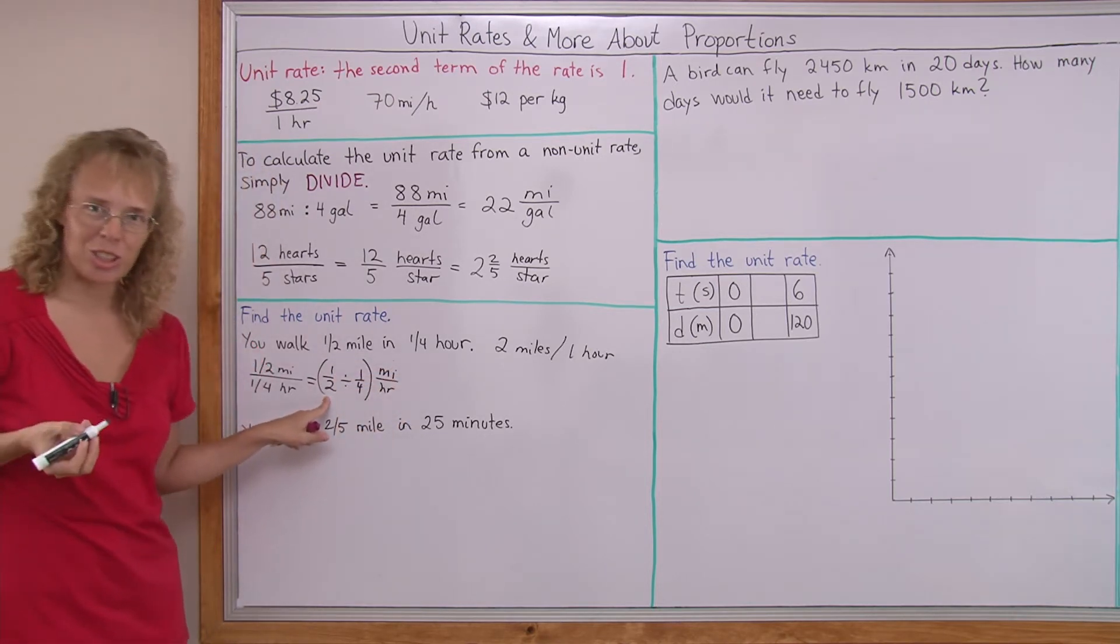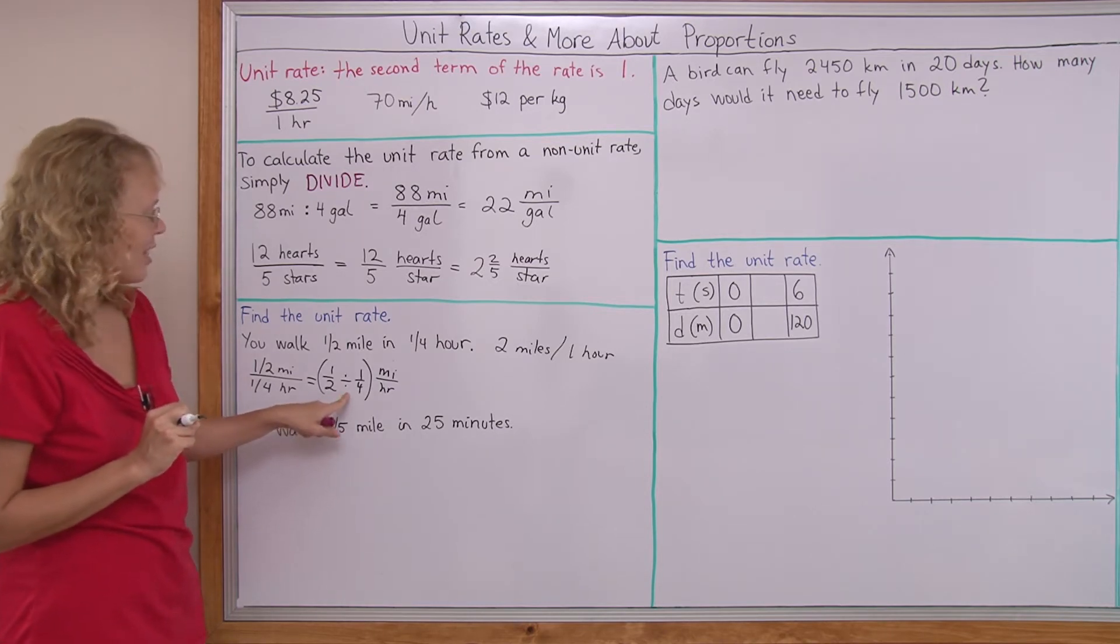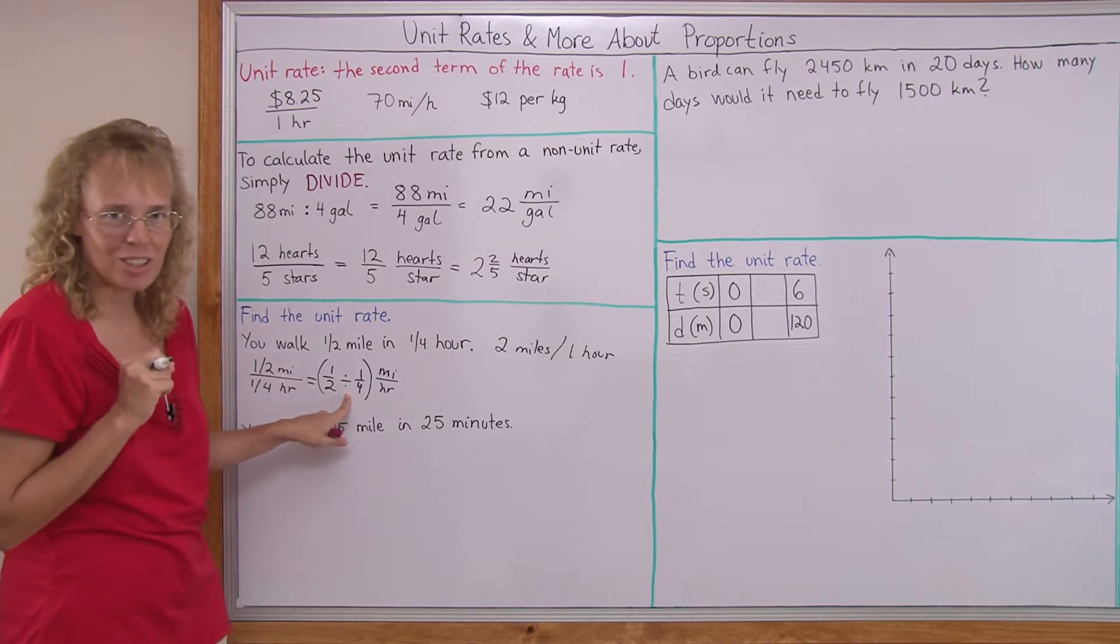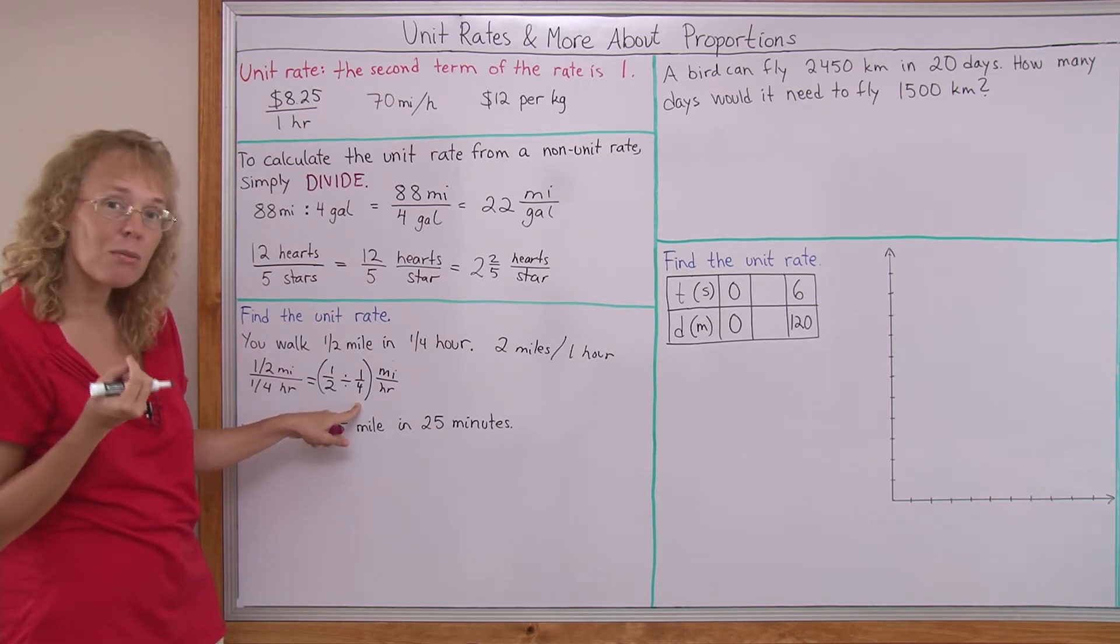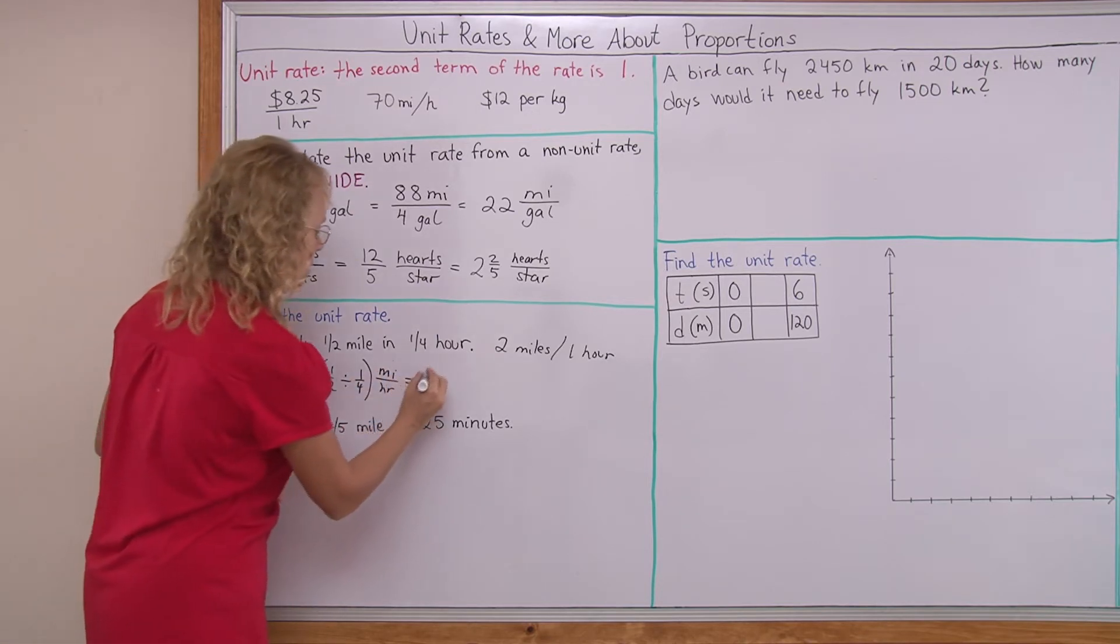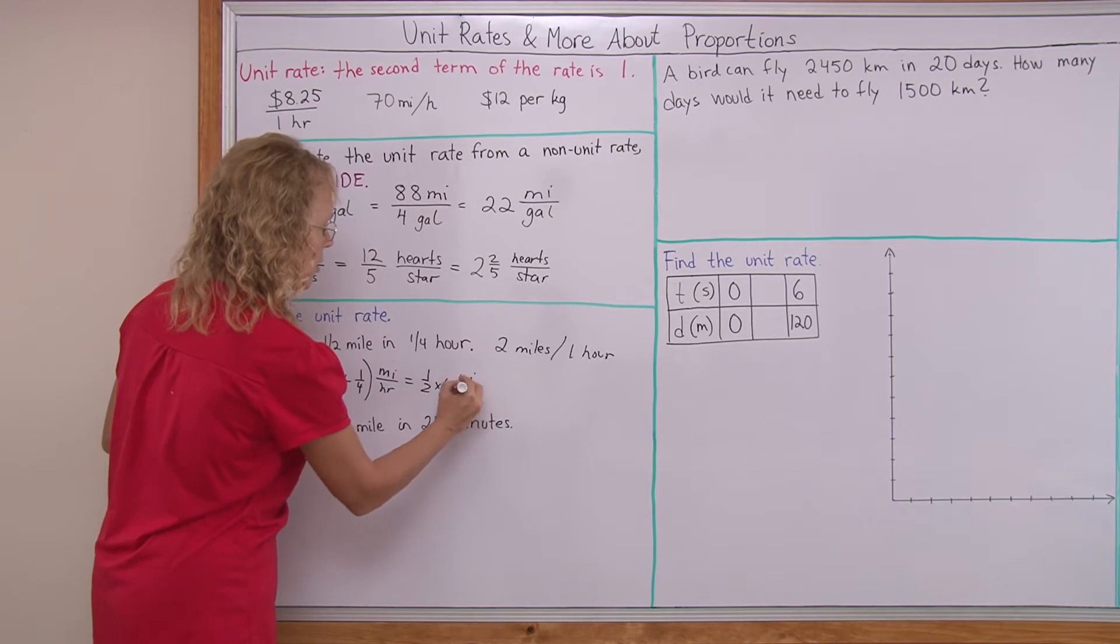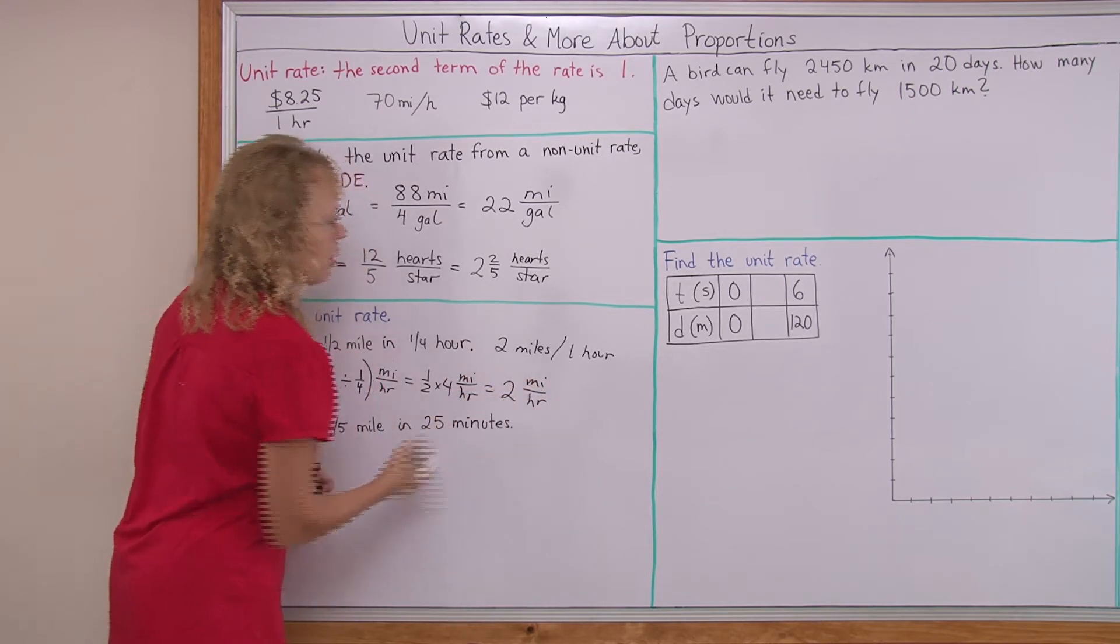And now in fraction division, remember how that was done? You need to remember by this point. The division changes into a multiplication, and then this changes into its reciprocal number, which is four. So it is going to be half times four miles per hour, or two miles per hour.